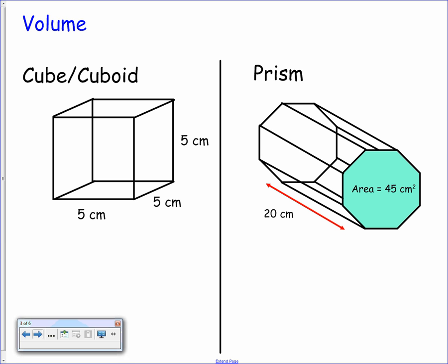The first one we're looking at here is to find the volume of a cube or a cuboid. This is not one of the formulas that's given to you so you need to remember this. You should remember that the volume is length times breadth times height.